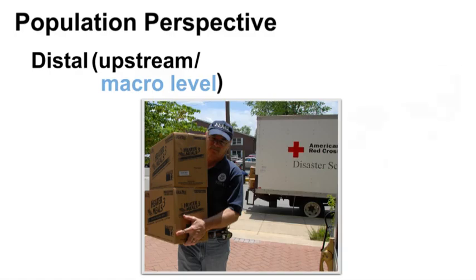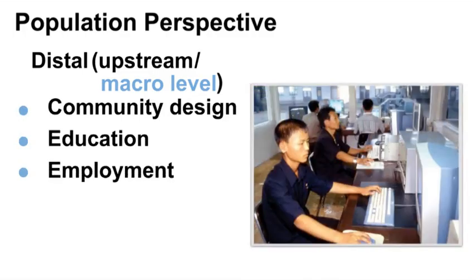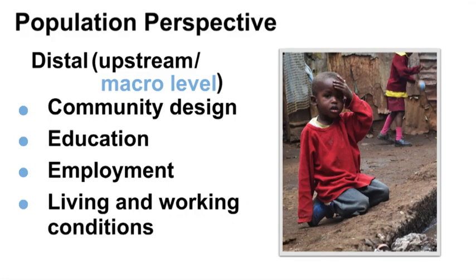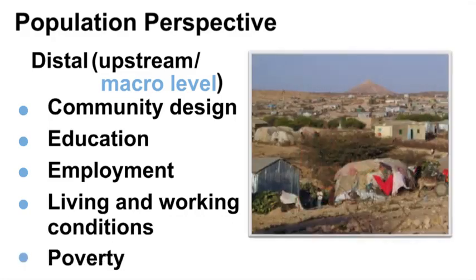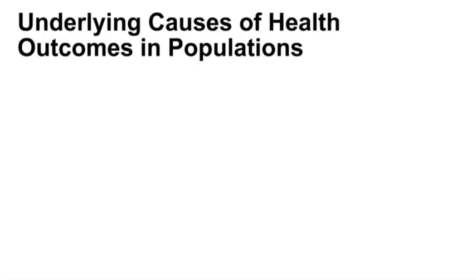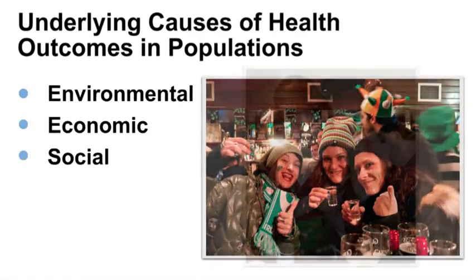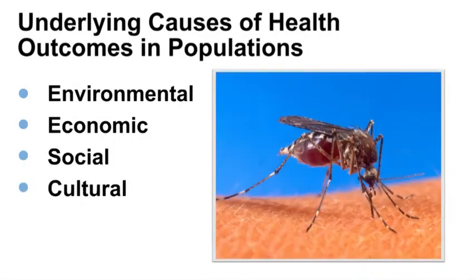Upstream factors such as community design, education, employment, living and working conditions, and poverty are major determinants of health that may be addressed upstream. We can also look at the underlying causes of disease or health outcomes in populations — for example, underlying environmental, economic, social, and cultural factors. Such underlying factors may affect how viruses mutate over time and adapt to their environment.